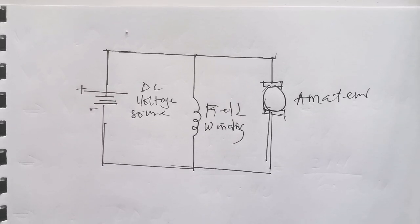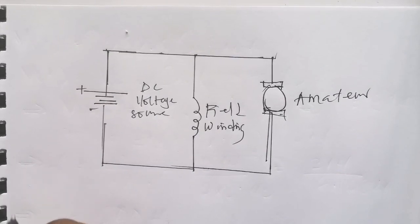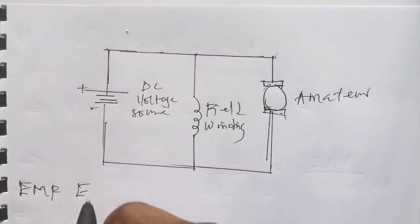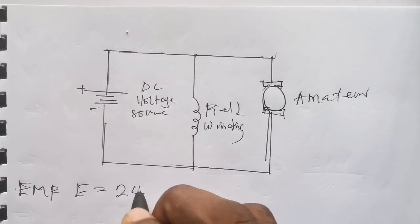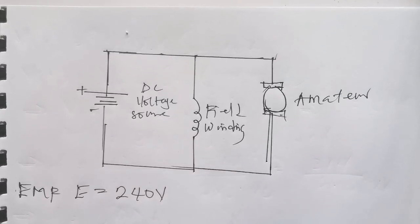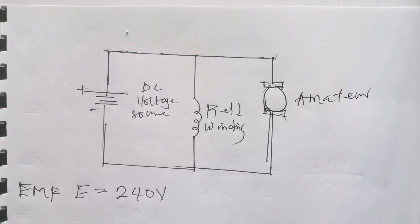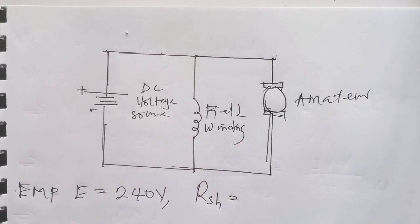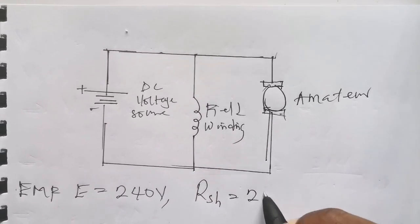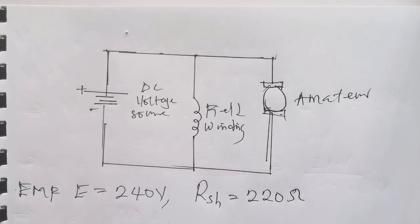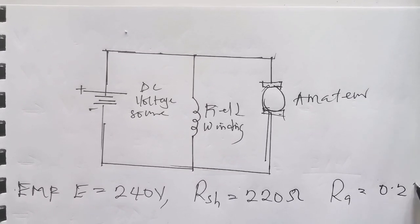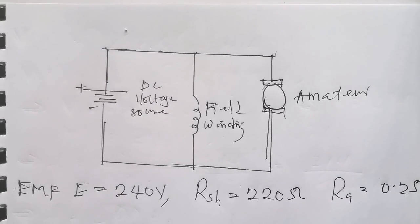Let's pick out our given parameters. We are given that the DC shunt motor takes a total of 240 volts, so this implies that the supply EMF E is equal to 240 volts. We are also given that the field winding resistance Rsh is 220 ohms, and the armature resistance Ra was given as 0.2 ohms.